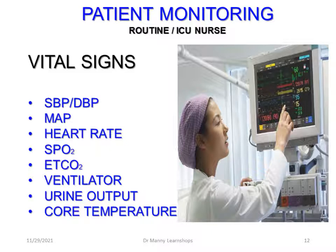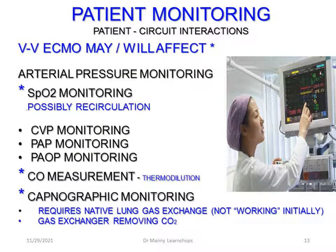For patient monitoring, the ECMO-dedicated nurse and ICU nurse typically perform blood pressure monitoring, heart rate, pulse oximetry, capnography, ventilator observations, urine output, and core temperature — and both nurses work together. VV ECMO may affect arterial pressure monitoring and SpO2 monitoring due to recirculation. CVP and pulmonary artery occlusive pressure monitoring could also be affected. Cardiac output measurement via PA thermodilution won't be accurate, and capnography won't be accurate initially because the gas exchanger removes carbon dioxide.